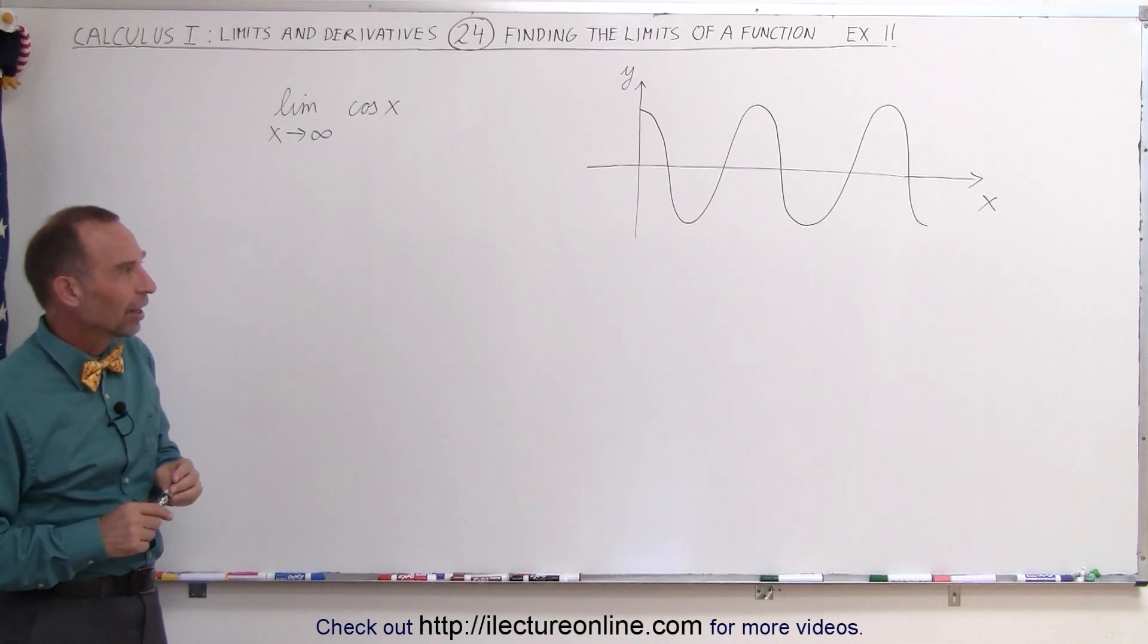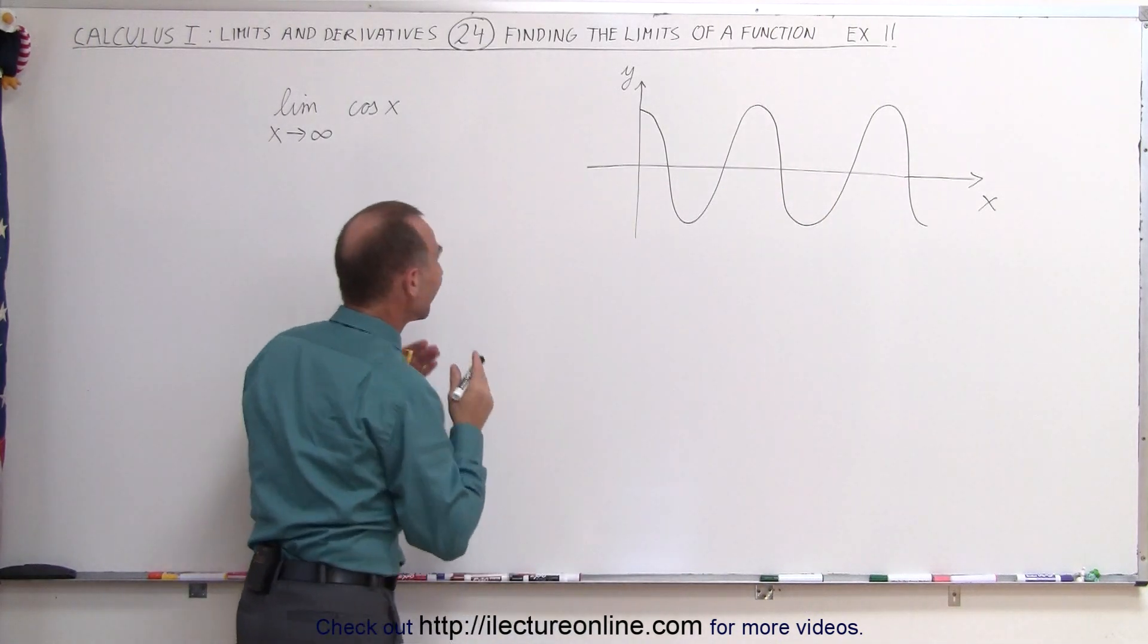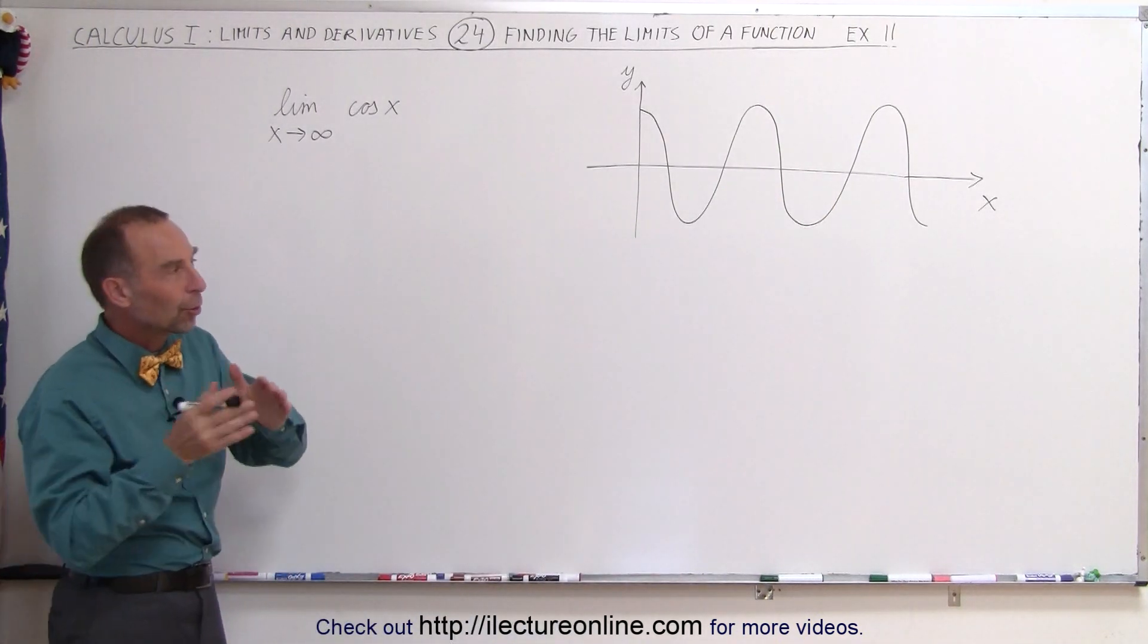And here, of course, I've drawn the cosine function on the board, starting from x equals 0 on to the right. So what happens? What is the limit as x approaches infinity?